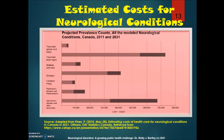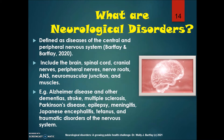What are neurological disorders? We define them as diseases of the central and peripheral nervous system. They include the brain, the spinal cord, cranial nerves, peripheral nerves, nerve roots, the ANS, neuromuscular junctions, and muscles. Examples include Alzheimer's disease and other dementias, stroke, multiple sclerosis, Parkinson's disease, and epilepsy.